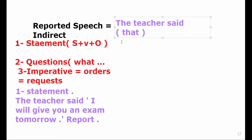For a statement, we use the joining word 'that,' which is optional. You can use it or not — both are correct and you get the full mark either way. So: 'The teacher said (that)...' Then we come inside to change. Some pronouns must be changed. 'I' here refers to the teacher, so change 'I' into 'she.'